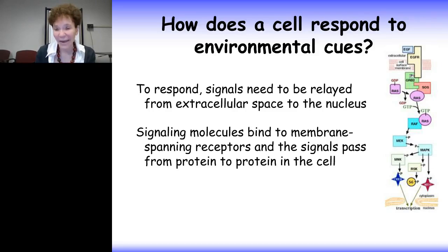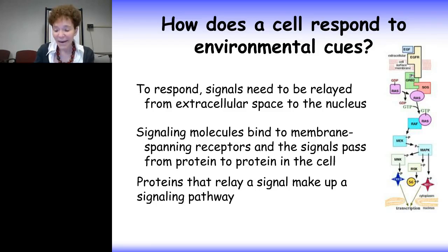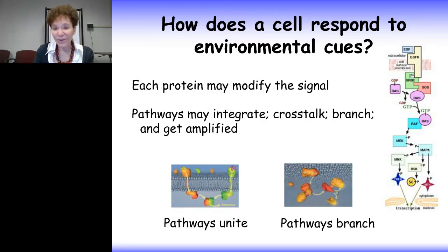What happens is that signaling molecules bind to the extracellular domain of a membrane-spanning receptor, at the top right-hand side of the diagram. Then they pass through the membrane, through the cytoplasm, and through physical interactions between the proteins in the cell.